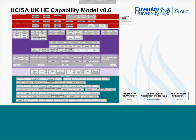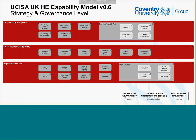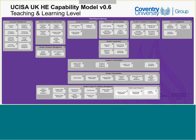In terms of the model structure, the red section at the top is where our model differs — we've raised strategy, governance, and organisational structure to a much higher, more prominent level. Someone on the project team pointed out last week that architecturally we've drawn that slightly wrong, so version 0.7, coming out in the next couple of weeks, will look slightly different.